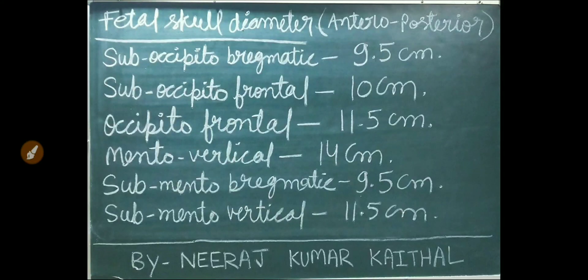Anterior-posterior fetal skull diameters: Suboccipitobregmatic 9.5 cm, Suboccipitofrontal 10 cm, Occipitofrontal 11.5 cm, Mentovertical 14 cm, Submentobregmatic 9.5 cm, Submentoverticl 11.5 cm.